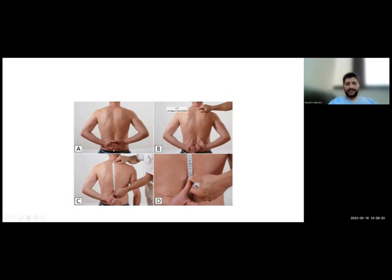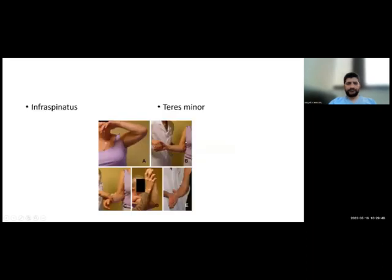This is how to measure internal rotation — a frequent exam question. You can tell where the patient can reach, for example, the iliac crest or lumbar spine. A simple measure is the distance between C7 and the patient's thumb. For infraspinatus and teres minor, use the Hornblower test for teres minor, and external rotation against resistance with abduction for infraspinatus.